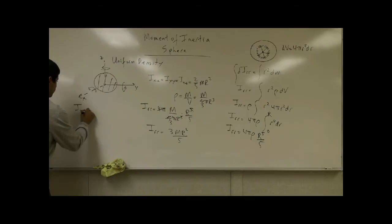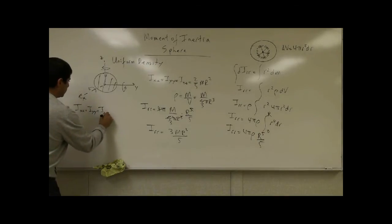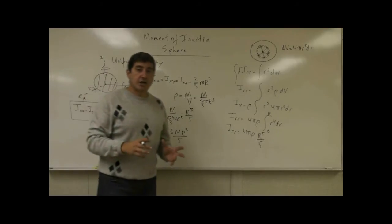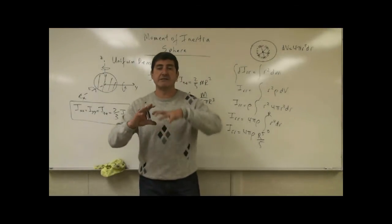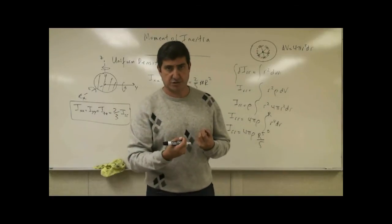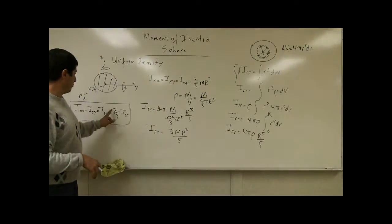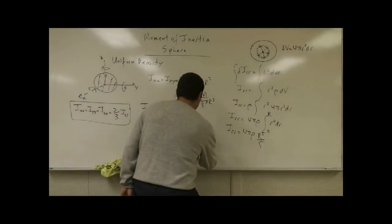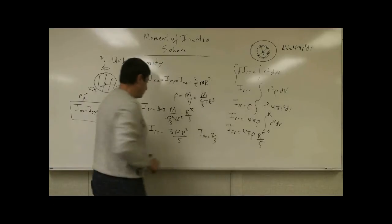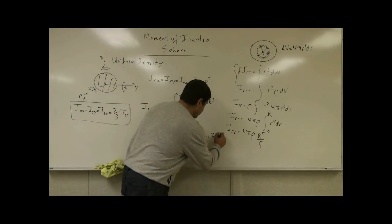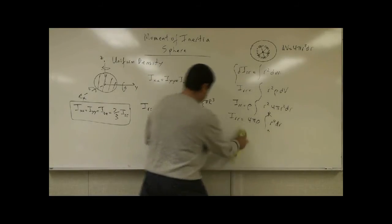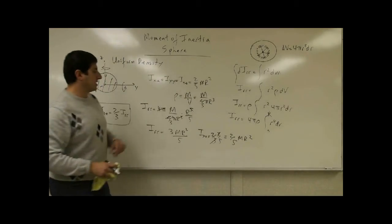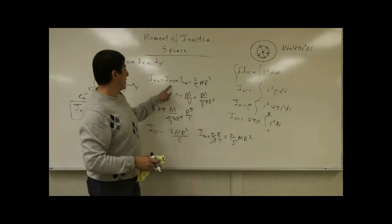Now we use the theorem that says I_xx = I_yy = I_zz = two-thirds of I_RR. I_RR was just an imaginary concept — as if the sphere could rotate around its center point. We take two-thirds of whatever we get for I_RR. So I_xx = (2/3) × (3/5) m r² = two-fifths m r squared.